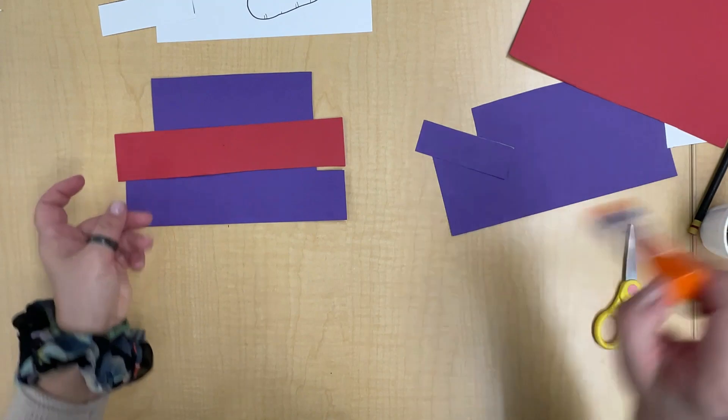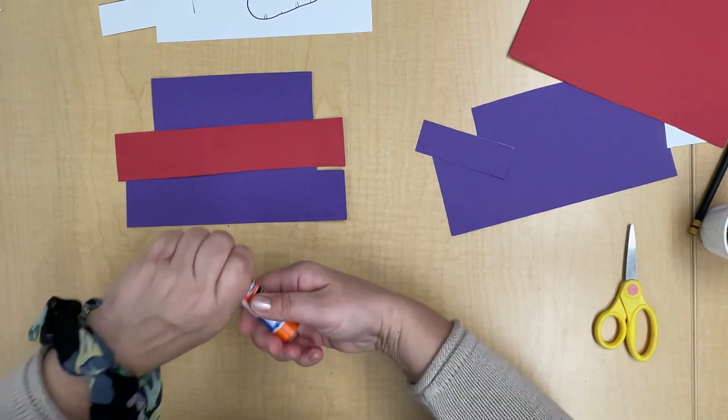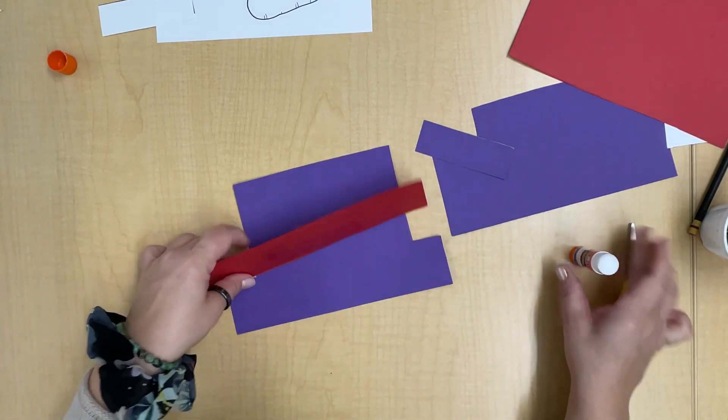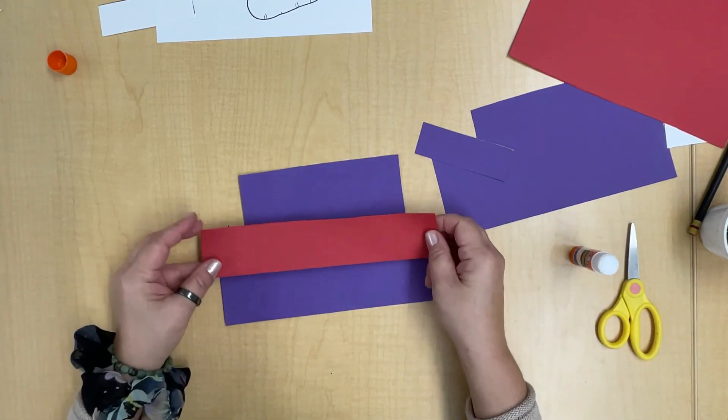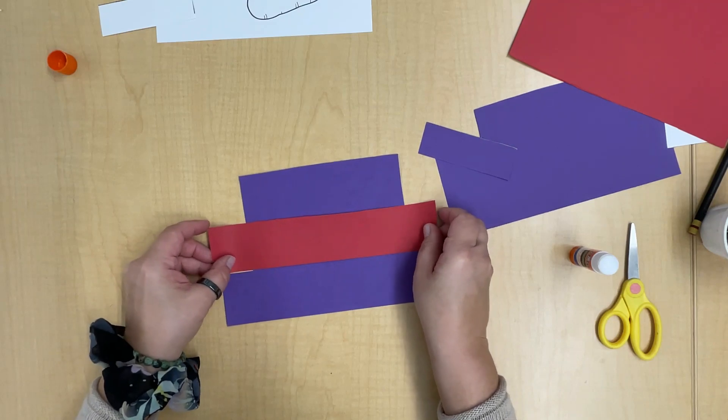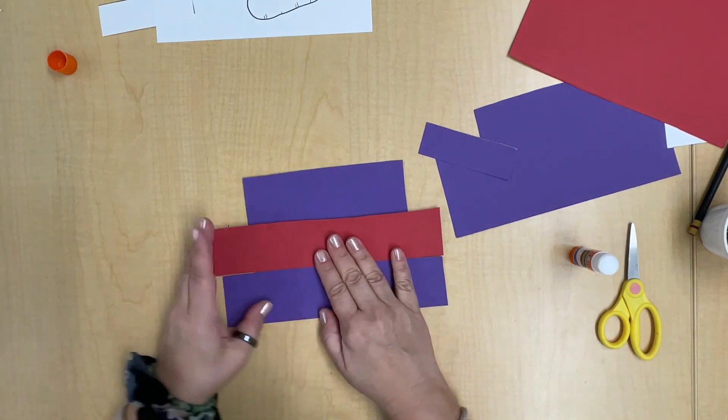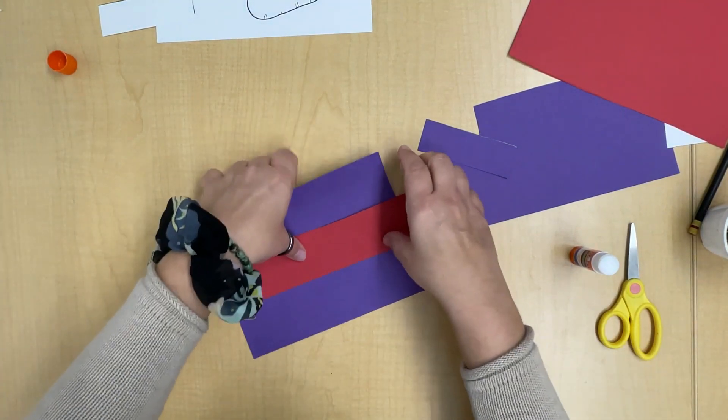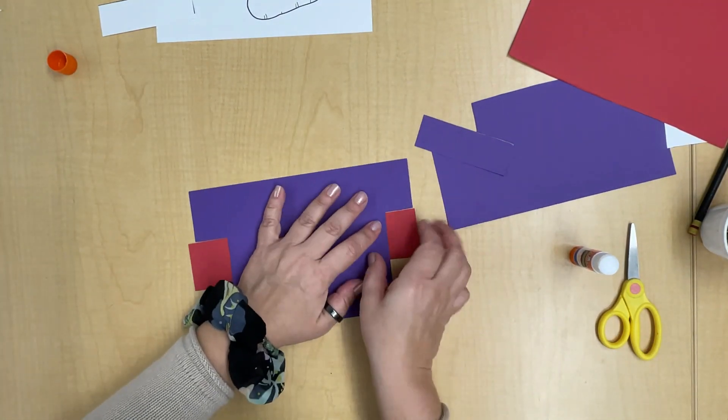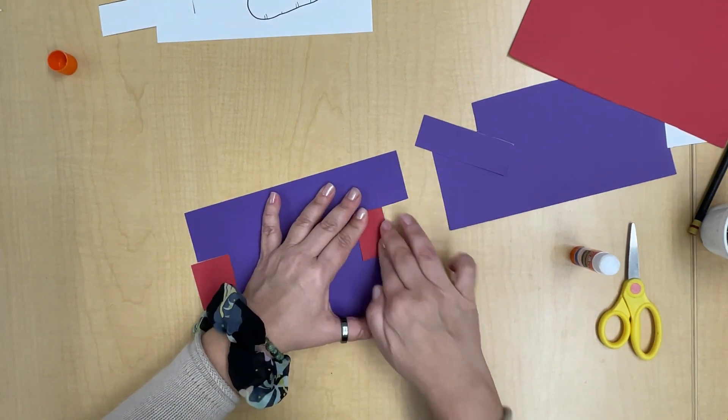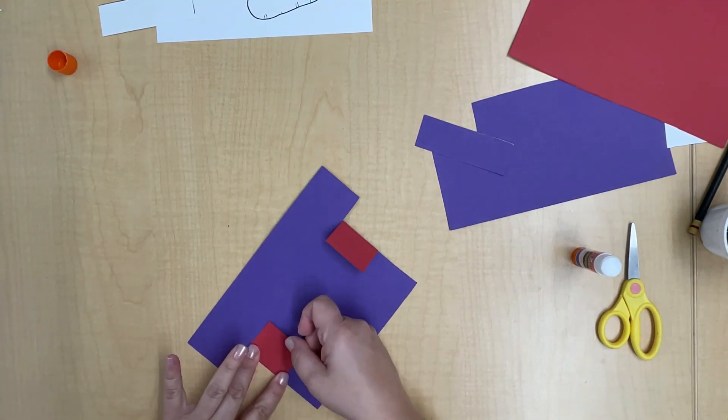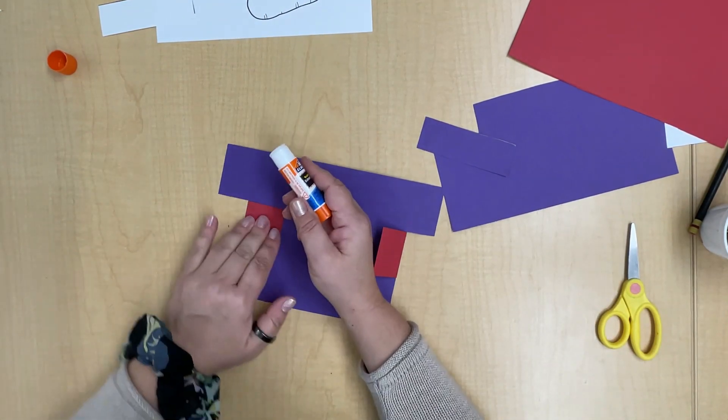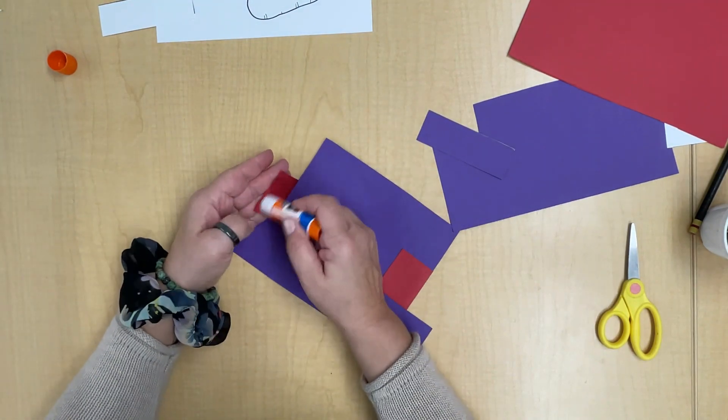Now I'll grab my glue stick and put a little bit of glue. I'm gonna center it on my hat right above the brim, and now I'm gonna turn it over and just fold those pieces in. I'll put some glue on there to hold them in place.